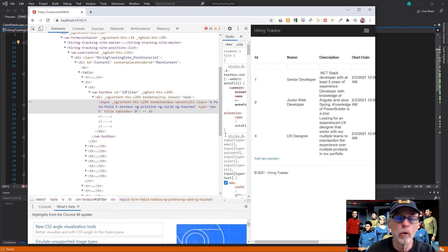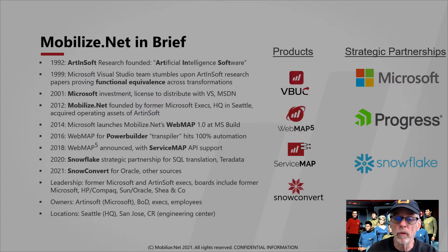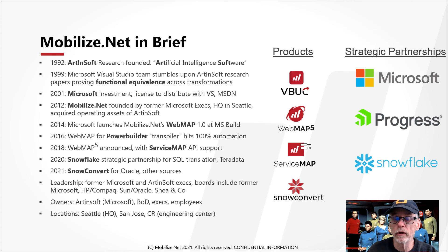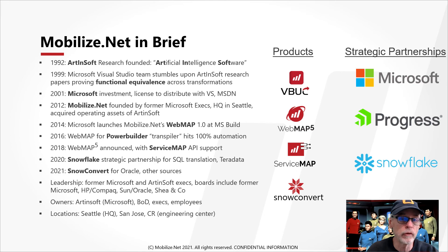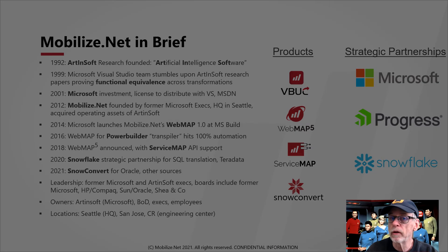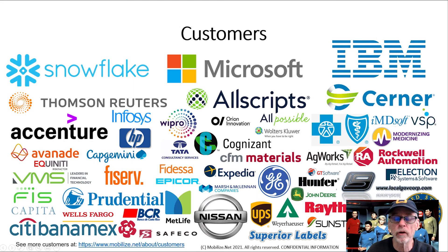We use the same technology that we've been using for over 20 years to migrate applications — literally thousands and thousands of desktop applications — from old languages like VB, PowerBuilder, and Silverlight to modern things like ASP.NET Core, .NET Core, even Java Spring.